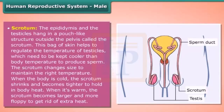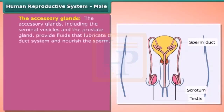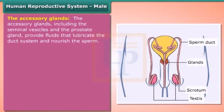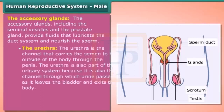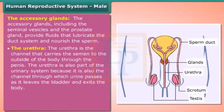When it is warm, the scrotum becomes larger and more floppy to get rid of extra heat. The accessory glands, including the seminal vesicles and the prostate gland, provide fluids that lubricate the duct system and nourish the sperm.